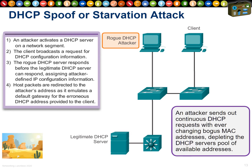A rogue DHCP server is always bad news. The second attack is starvation — software on a client sends 100,000 DHCP discoveries and requests with different MAC addresses. The DHCP server is obliged to allocate IP addresses to all those requests and simply runs out of addresses.